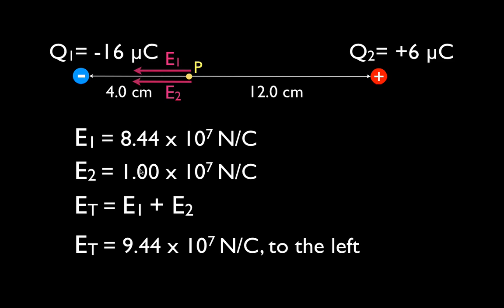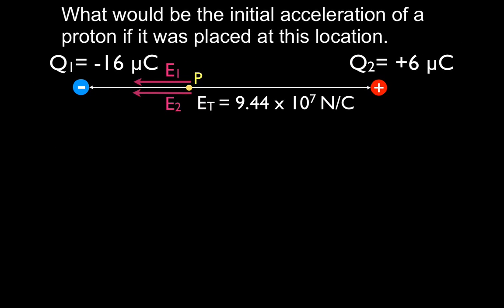We didn't need any negatives — both fields are in the same direction, so we just add them. Now, we said earlier there's nothing at point P, but we could put something there. Let's figure out the acceleration of a proton if we put a proton right there. We can use Newton's second law, F = ma, to calculate the acceleration. It's the electric force that's going to cause the proton to move — this is electricity, not mechanics.